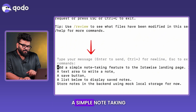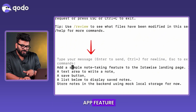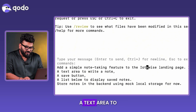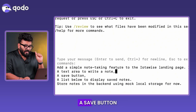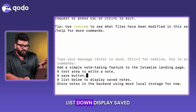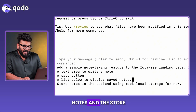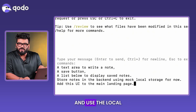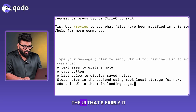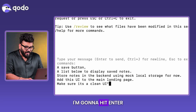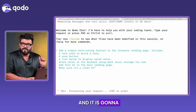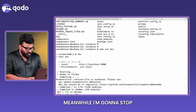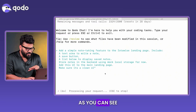I'm going to prompt it: 'Add a simple note-taking app feature to the landing page, include a text area to write a note, a save button, list and display saved notes, store the mock-up in the background, use local storage for now, and add this to the UI.' I'll hit enter and it will start processing.